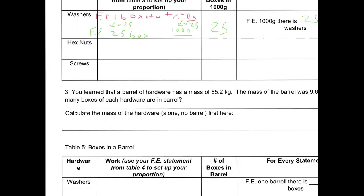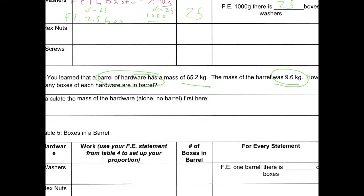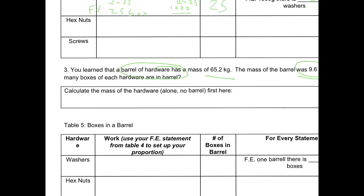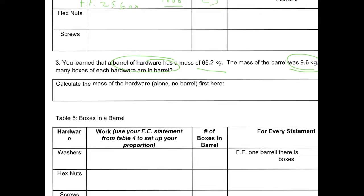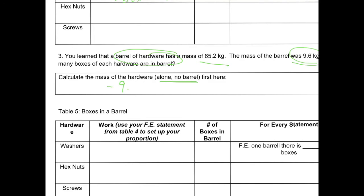A barrel has a mass of 65 kilograms — this is a barrel of hardware. The mass of the barrel itself is 9.6 kilograms. It asks how many boxes of each hardware are in a barrel. We have to calculate the mass of the hardware alone without the barrel. So I subtract the barrel mass of 9.6 kilograms from the barrel plus hardware total of 65.2 kilograms, which comes out to 55.6 kg.